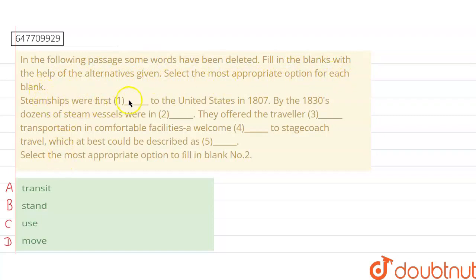Here we have given a paragraph and we can see some words have been deleted. We have to select the most appropriate option to fill in blank number 2. We have given 4 options: A, B, C and D. So let's read this paragraph and find the right answer.